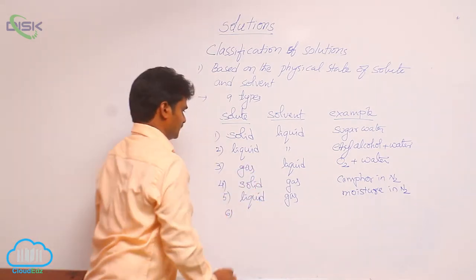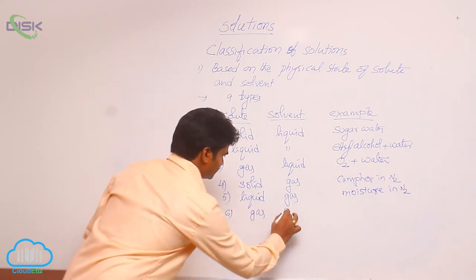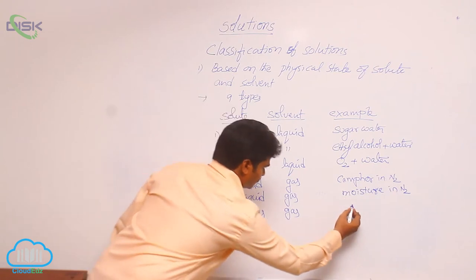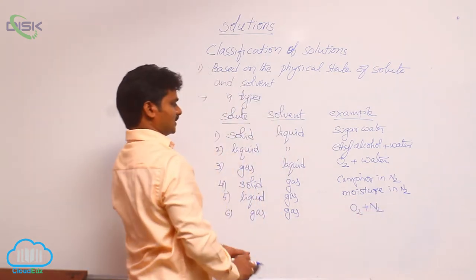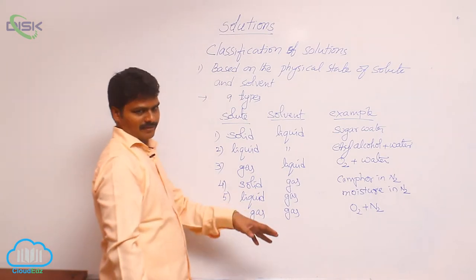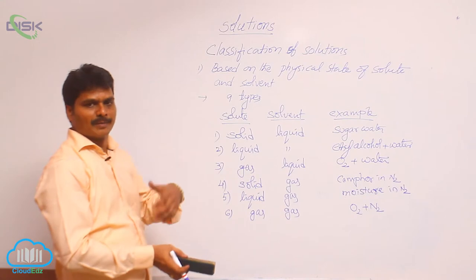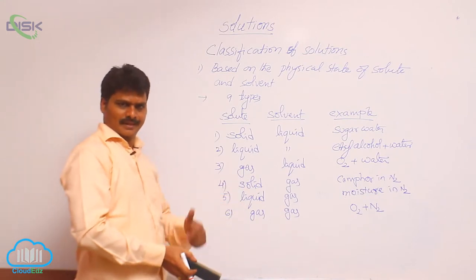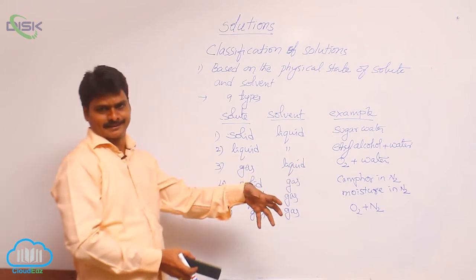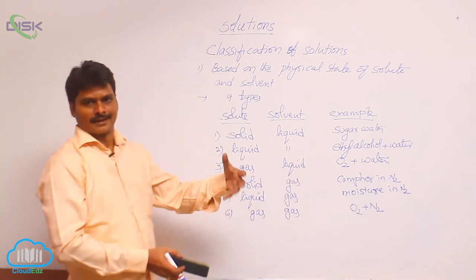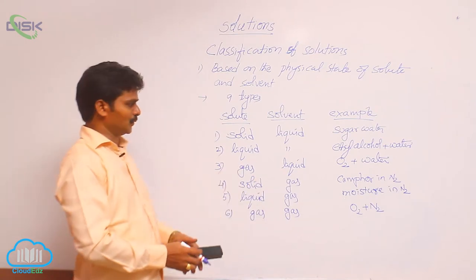Sixth one, gas in gas. For this example, O2 plus N2. Here, oxygen solute, nitrogen solvent. If you take air as a solution, there are so many components in air. In that, N2 is the major component. That is why it is the solvent, remaining all gases. That means oxygen, carbon dioxide, methane. These all gases are the solutes.